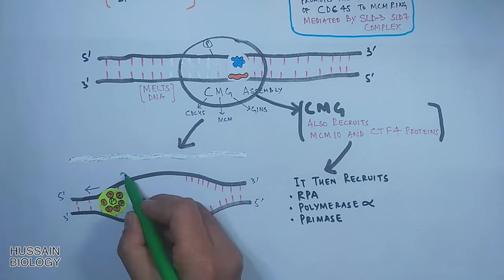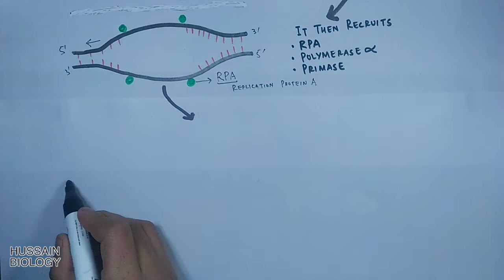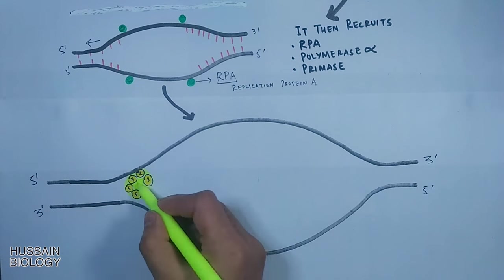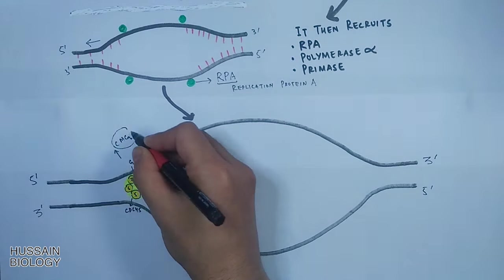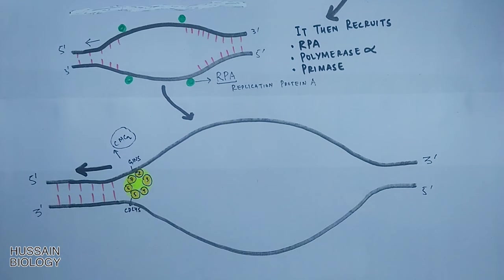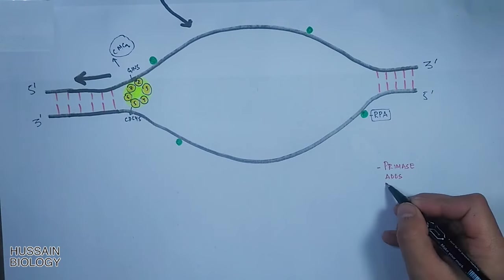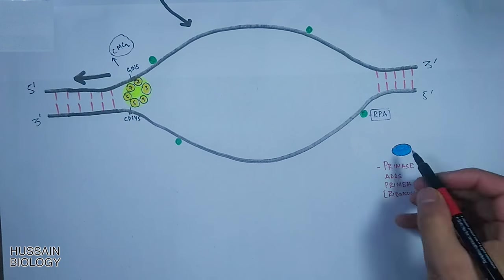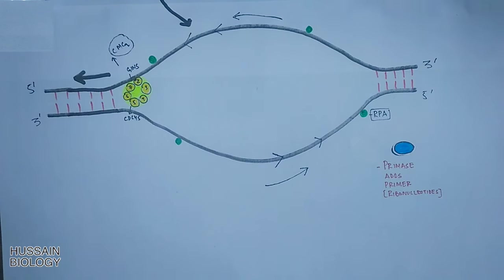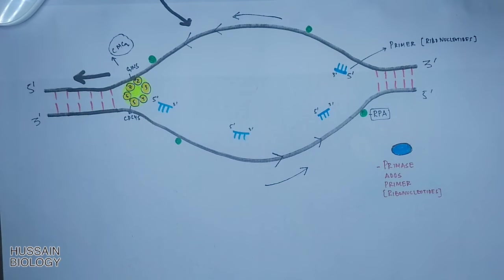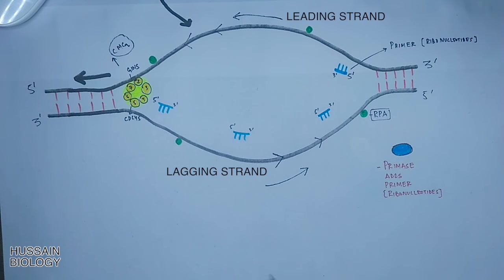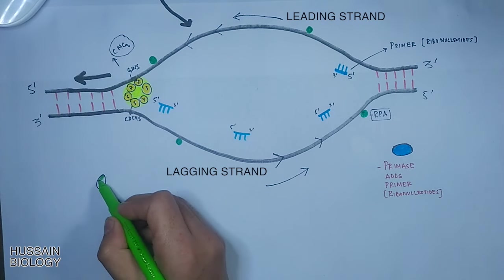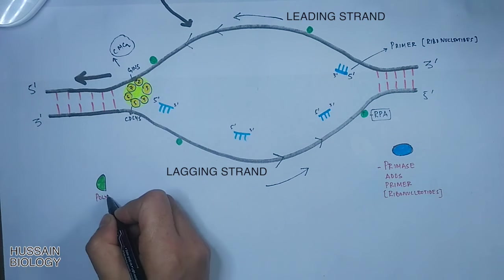Polymerase alpha and primase are always associated with each other. The RPA binds to both strands and prevents re-annealing. If we zoom into the diagram we can see mcm running towards the left and breaking the hydrogen bonds, thus showing the helicase activity. Then we have a primase enzyme which adds primers, a short RNA stretch. Primase adds one primer to leading strand, while it continuously adds primers to lagging strand because on lagging strand the DNA synthesis is always discontinuous, that's in Okazaki fragments.